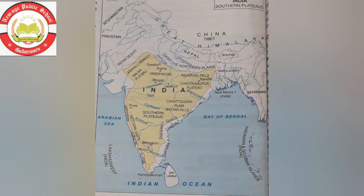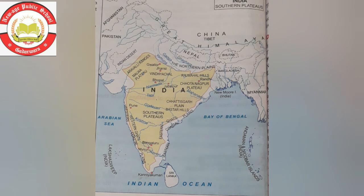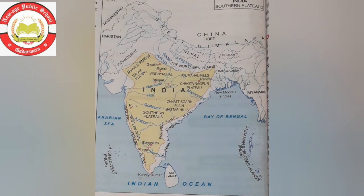The next state is Chhattisgarh, which was formerly a part of Madhya Pradesh. Farming is the main occupation. Crops include linseed, watermelons and rice. Rice is the most important crop of Chhattisgarh. Chhattisgarh is rich in mineral resources. The Bhilai Steel Plant is in this region. Raipur is the capital of Chhattisgarh.